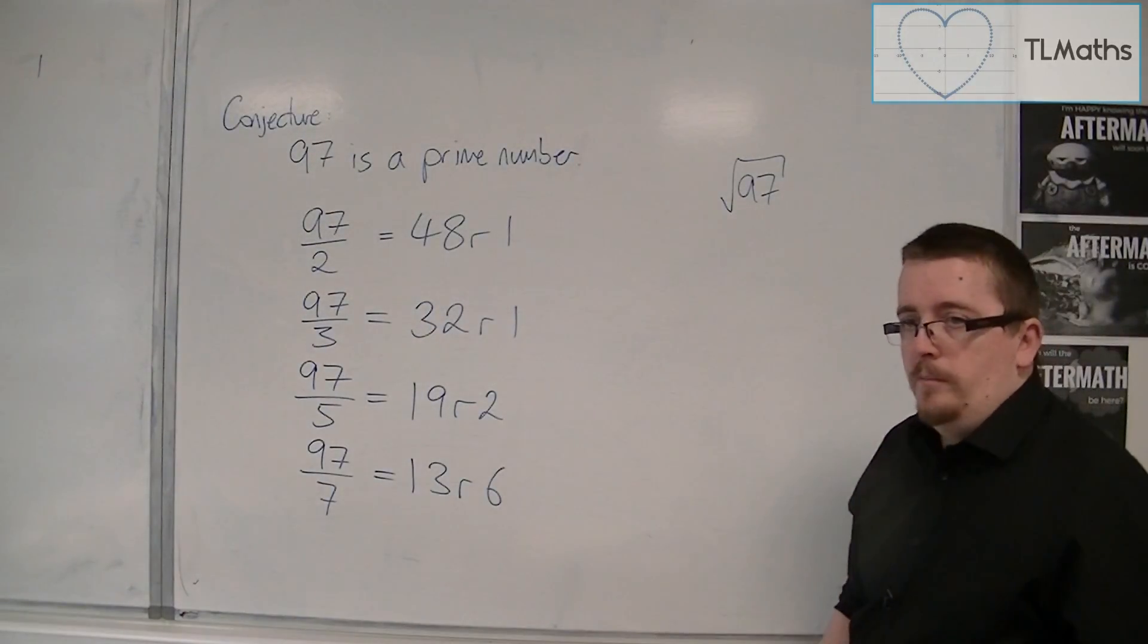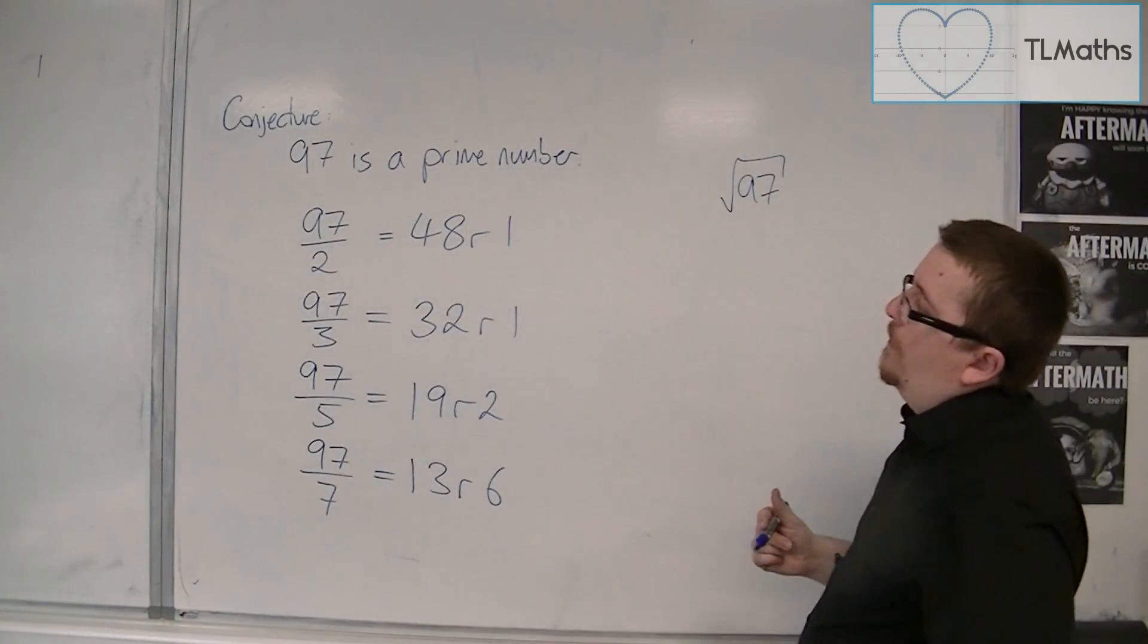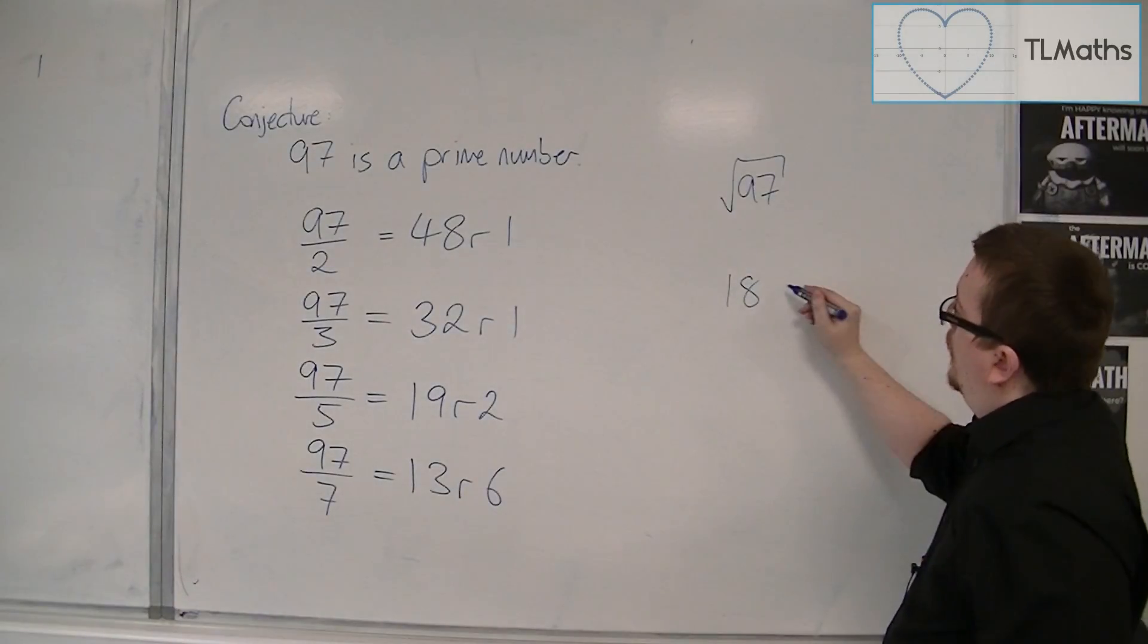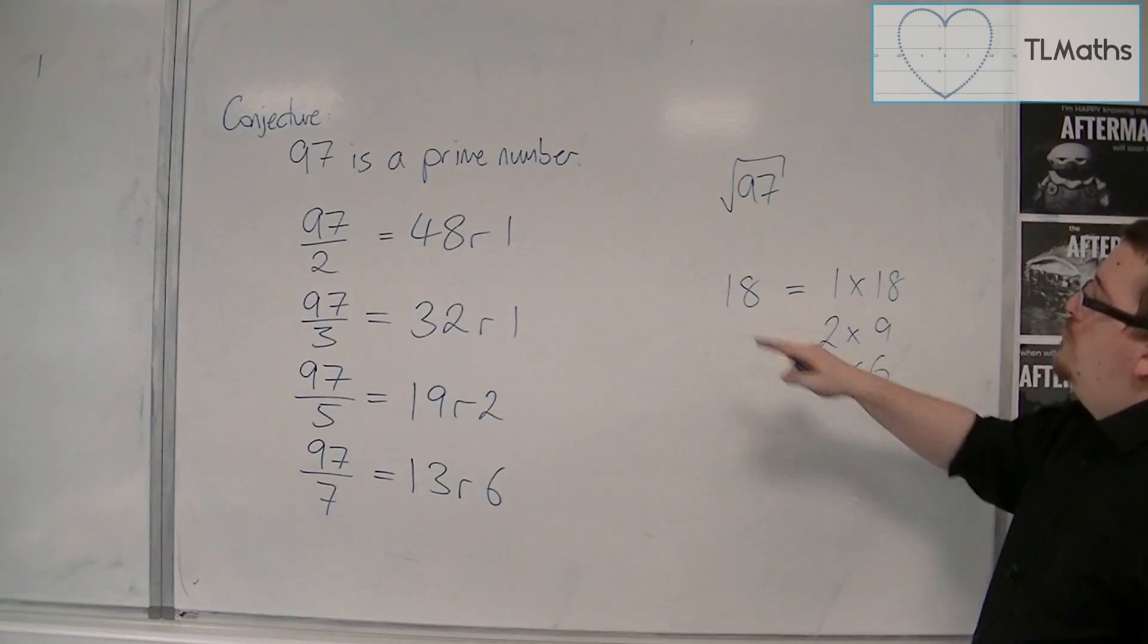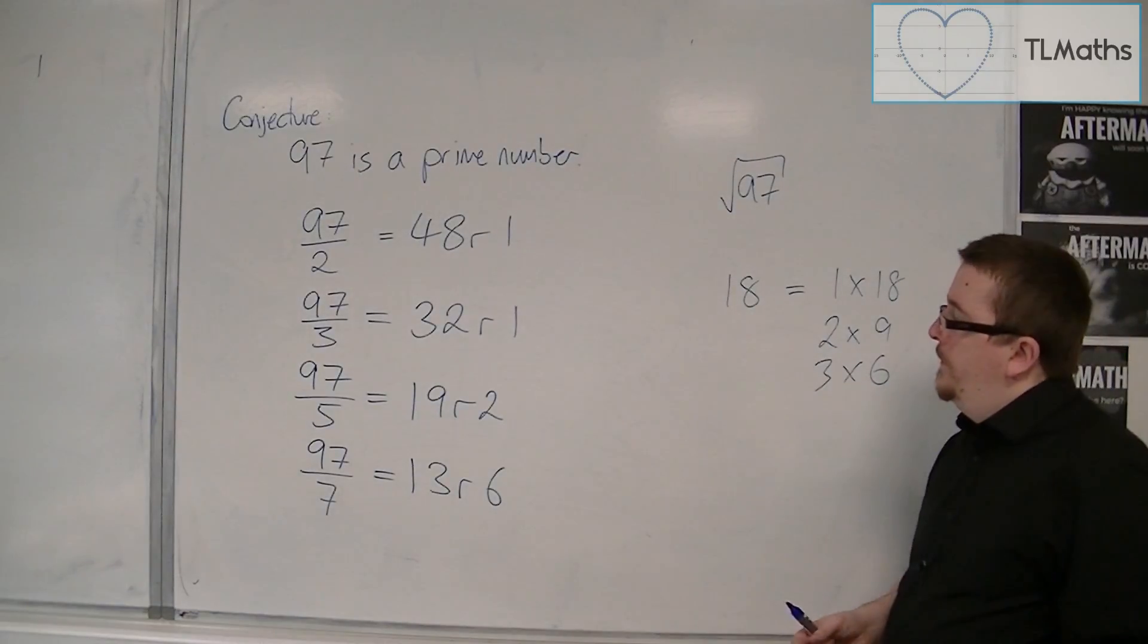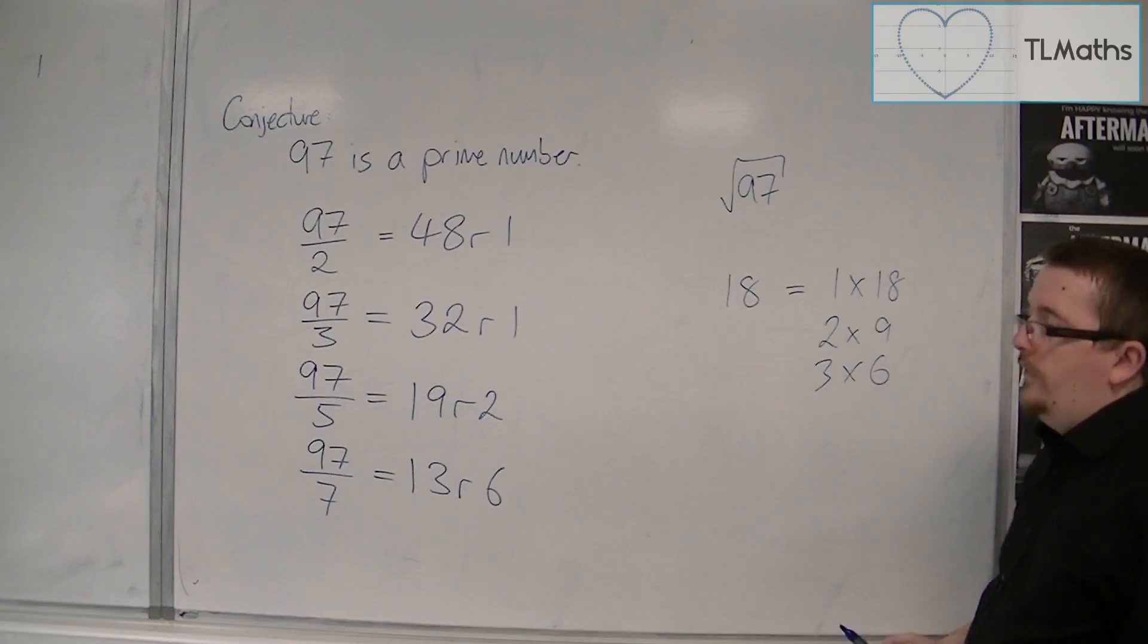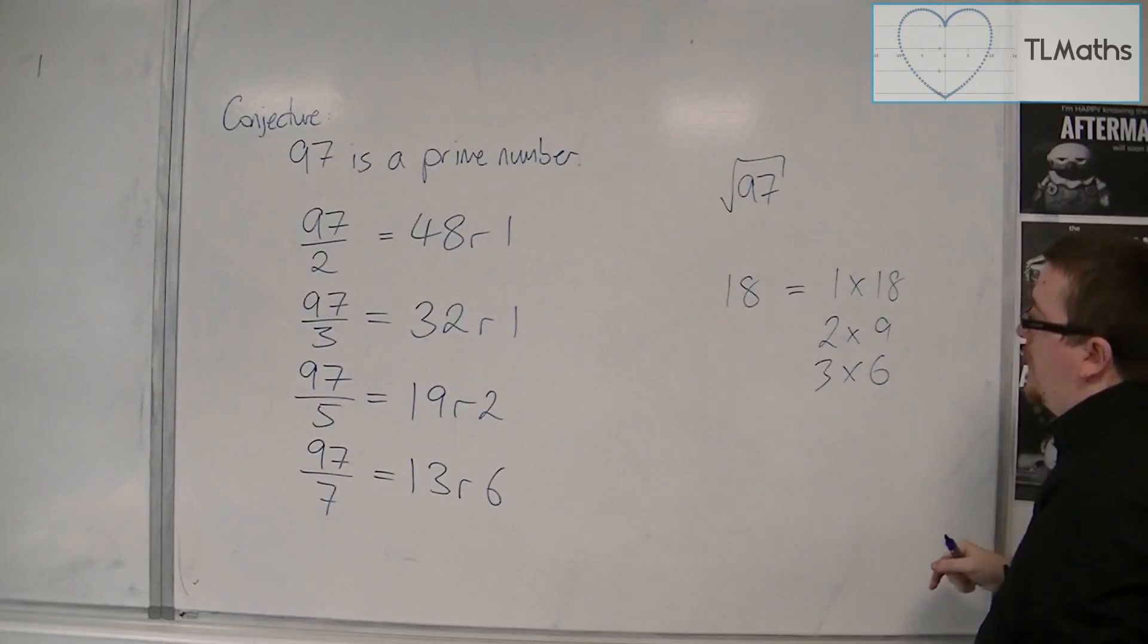So for example, if you were looking at 18, if you were looking at the number 18, then with 18 you can write that as 1 times 18, 2 times 9, 3 times 6. Square root of 18 is 4 point something. So you can see that in all three cases, the pairs are between 4 point something, between the square root of 18.